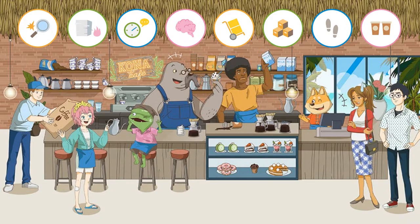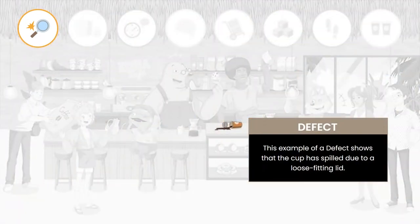First, let's walk through a description of each of the wastes. Defects occur when products, information, or services are incomplete or inaccurate, such as broken parts, missed deadlines, and wrong or missing data.